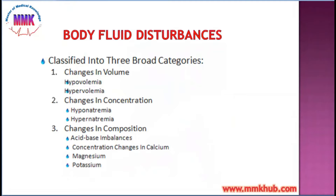The second category is changes in the concentration. The major extracellular cation is sodium, and sodium is responsible for fluid retention in the extracellular compartment. If the sodium concentration is decreased, that is hyponatremia, it affects fluid movement across the cell membrane. And if the sodium concentration increases, it is called hypernatremia, and it also affects the movement of fluid between the cell and the interstitial and intravascular spaces.